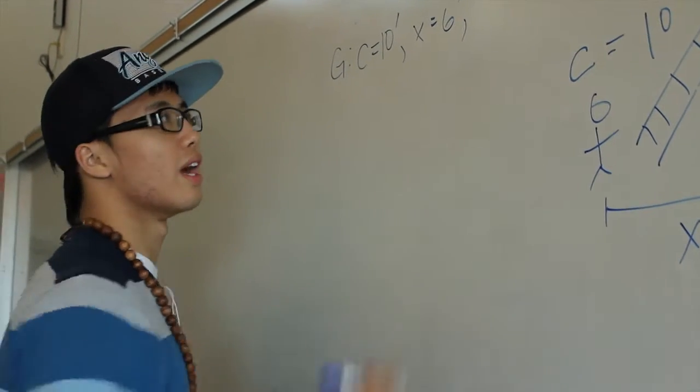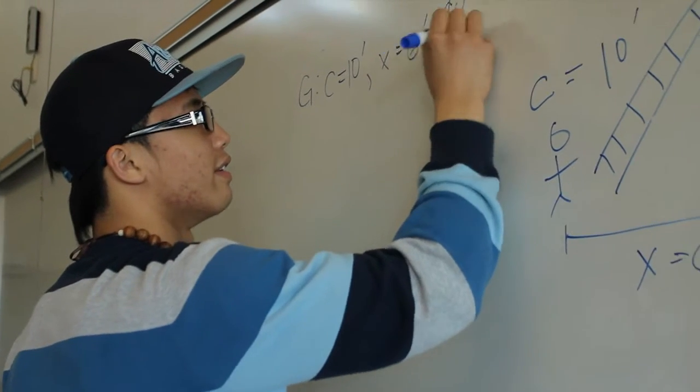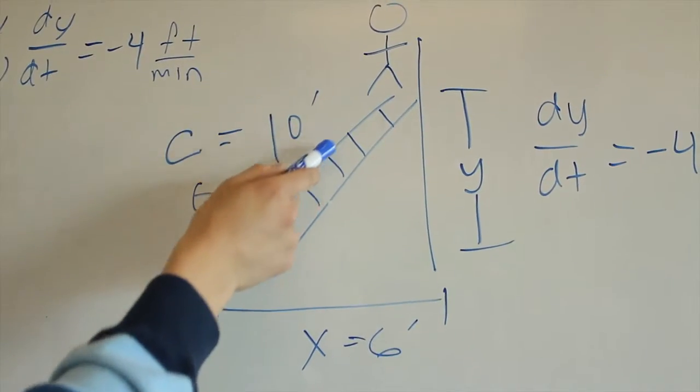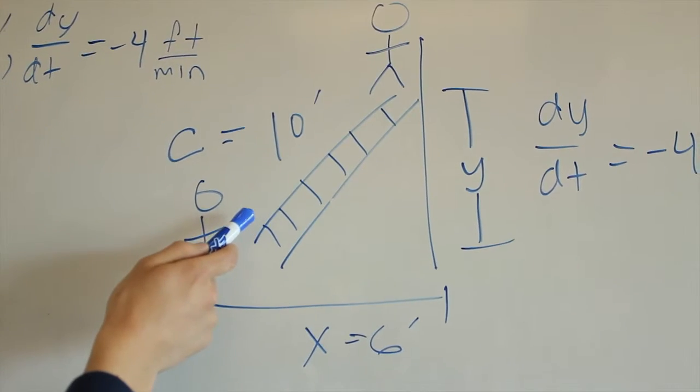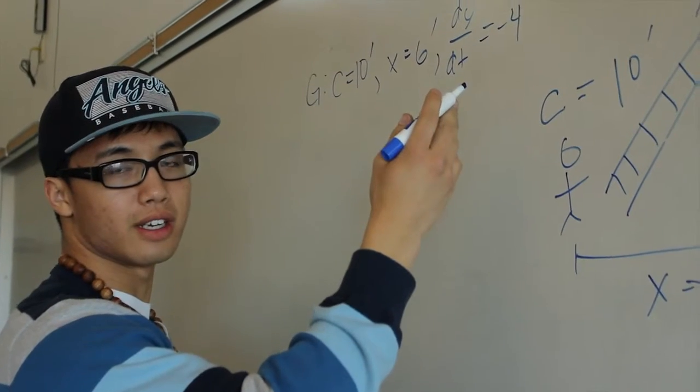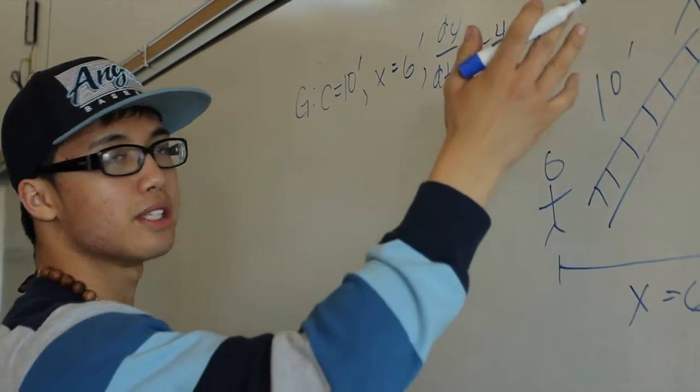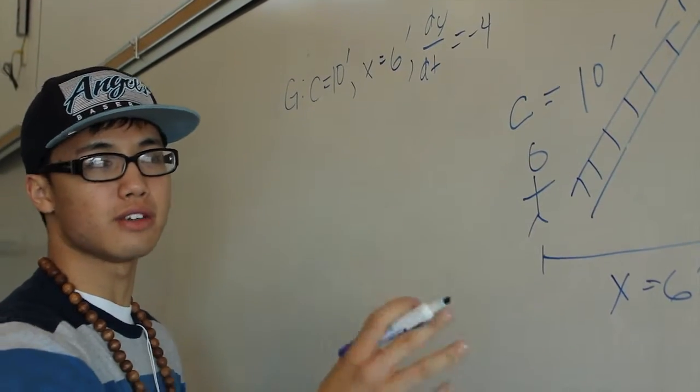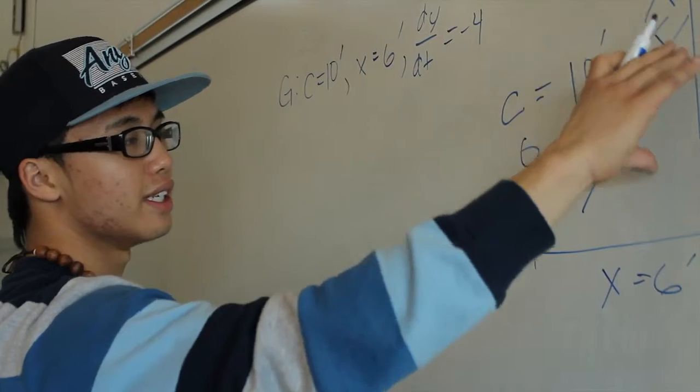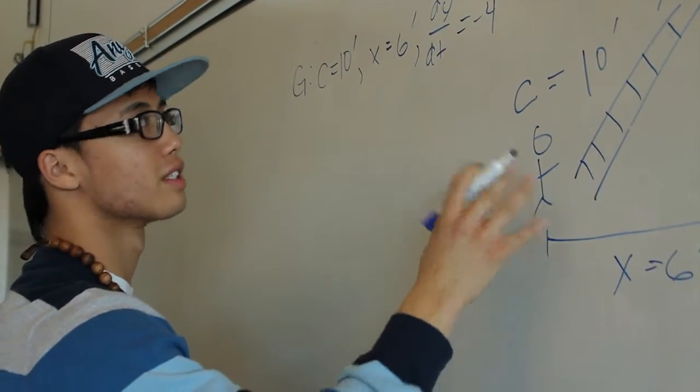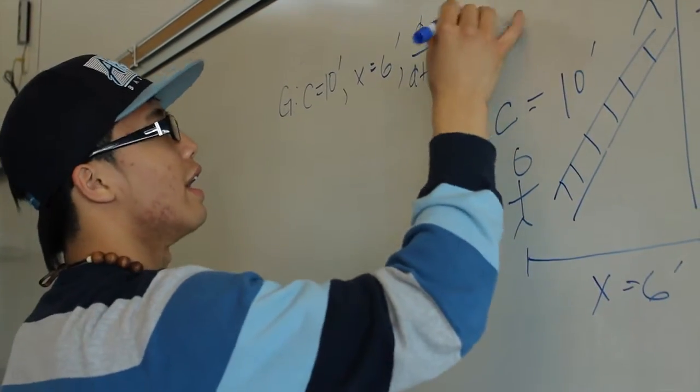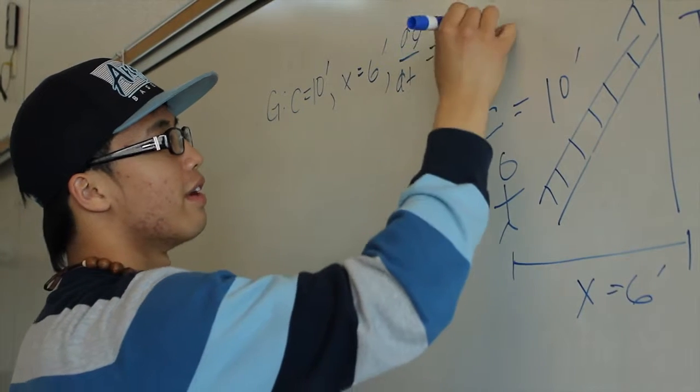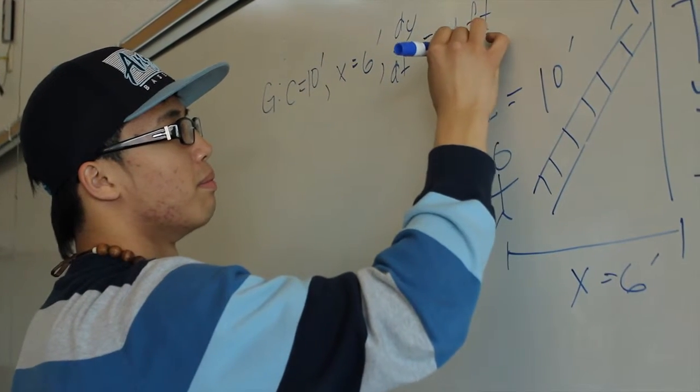And lastly, we have the change of rate of the ladder falling down, which will be labeled as dy over dt. The reason why I'm making it a negative is because the ladder is perched up against the wall, and it's falling. So the Y will decrease, and as the Y decreases, the X will increase. You will see why in a minute. And it's labeled as negative 4 feet per minute.